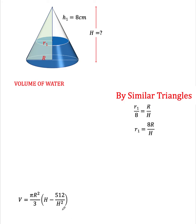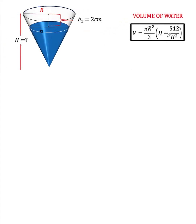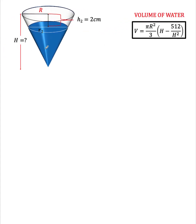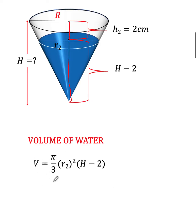Now let's go to the second cone. The volume of water in the first cone is theoretically the same as the volume of water in the second cone, because we simply inverted the first cone. If the height of the cone is H and the distance from the base of the inverted bottle to the water level is 2 centimeters, then the remaining distance from the tip to the water level must be H minus 2. The volume of water in this inverted cone is π/3 times r sub 2 squared times the height H minus 2.